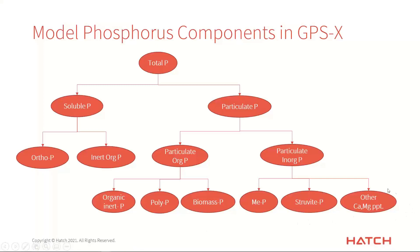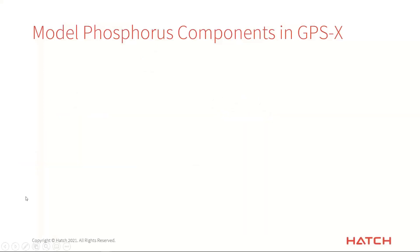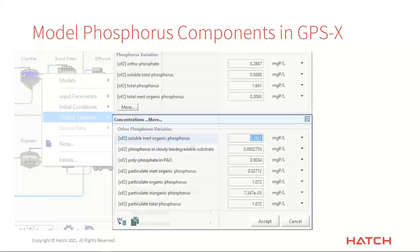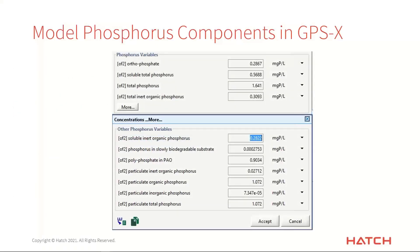We actually model all of these phosphorus forms individually in GPSX. We do the mass balance on each one for each reactor, and you can predict the concentration of each one. You add them all up to get total phosphorus and other summary numbers. When you're doing your modeling, you can actually dig into those details and see those concentrations, put them on graphs and in tables. At any connection point in your GPSX layout, you can right-click, go to Output Variables, go to the Concentrations menu, and slide down to your phosphorus variable section, where you'll see orthophosphate, soluble total phosphorus, and TP.